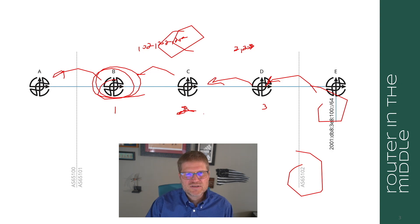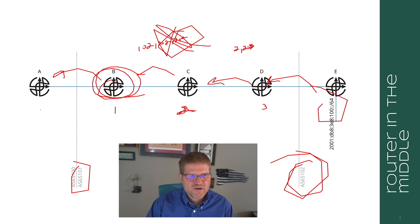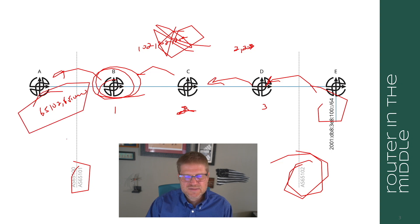So now what it's going to do is it's going to strip this section off and advertise it as if the route originates from AS 65102 and then it's going to add 65101. So the AS path over here at A is 65102, 65101. So that is how a confed works.